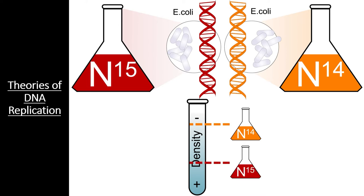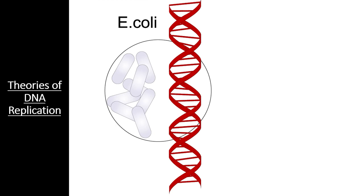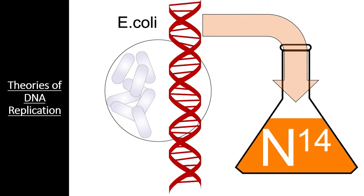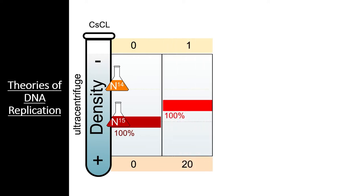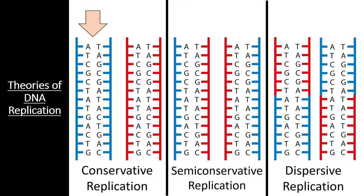The researchers started by growing E. coli in a solution with heavy nitrogen until all of the DNA in this colony was made from nitrogen-15. Then, this colony of bacteria was transferred to a growing medium that contained only nitrogen-14. The original generation showed a single band at the nitrogen-15 level. However, the first generation of bacteria showed a single band at an intermediate density between nitrogen-14 and nitrogen-15 levels. Since conservative replication would have produced two distinct strands — half heavy and the new half entirely light — this first generation eliminated the conservative hypothesis.